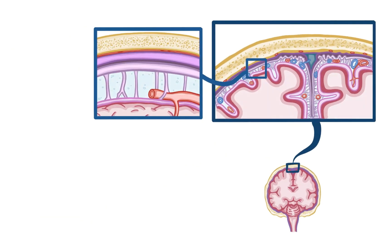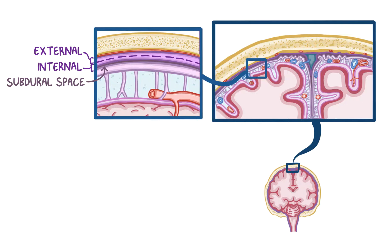The outer membrane, the dura mater, consists of two layers. The internal layer of the dura mater lies above the arachnoid mater, and the two are separated by the subdural space. The external layer of the dura mater adheres to the inner surface of the skull. These two layers travel together, but at certain spots the internal layer separates from the external one to form the meningeal folds.